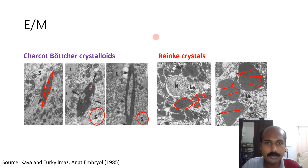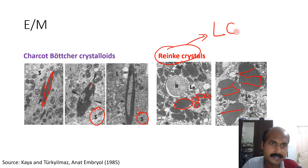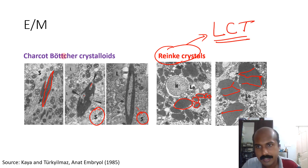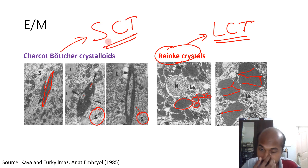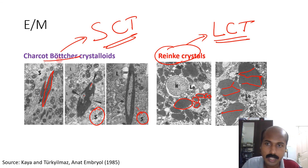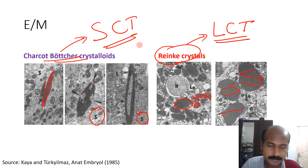Pathologically, since Reinke crystals are found in Leydig cells, they can be found in Leydig cell tumors of the testes. Charcot-Böttcher crystalloids can be found in Sertoli cell tumors, because they are located in Sertoli cells. These two can therefore also be considered pathological bodies found in tumors.